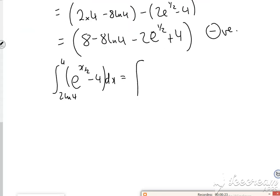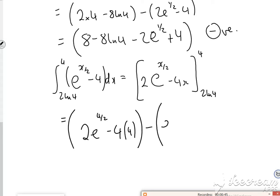So same idea. When I integrate it, the x over 2 differentiates as a half, but it is 1 over a half, so it becomes a 2, minus 4x, between 2 ln 4 and 4. So I'm subbing my numbers: 2 e to the 4 over 2 minus 4 lots of 4, minus 2 e to the 2 ln 4 over 2, minus 4 lots of 2 ln 4.